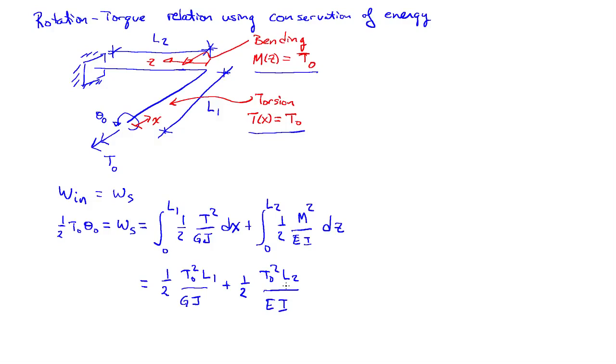Now I can cancel from both sides the one-halves, and I can cancel T0, one T0 there, one T0 there.